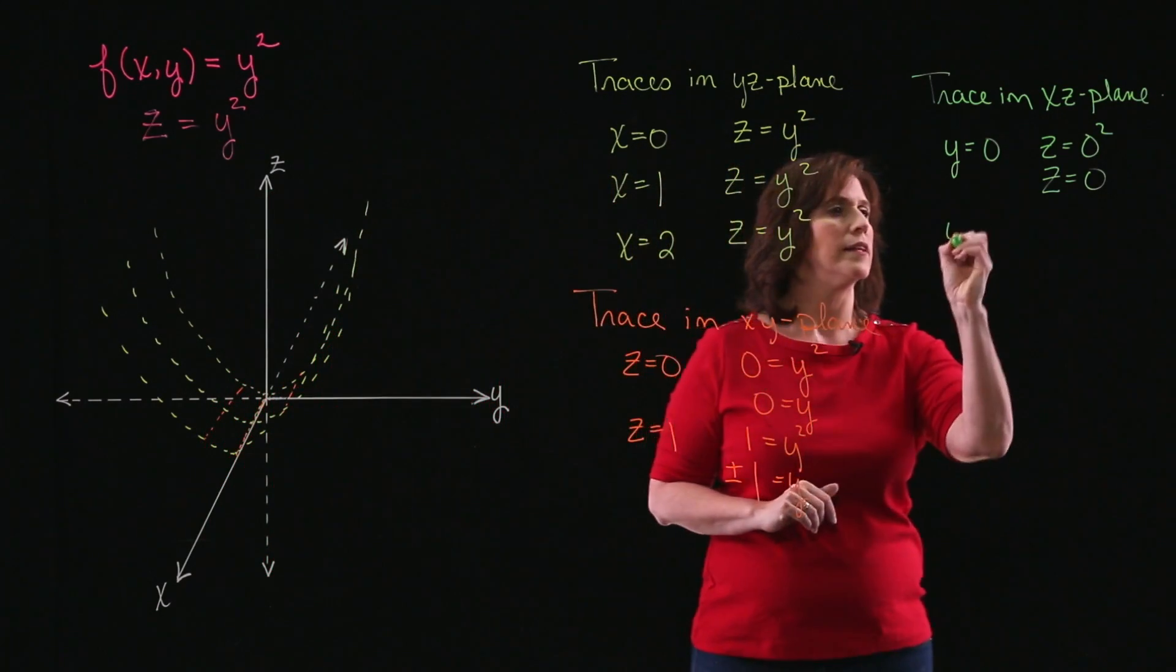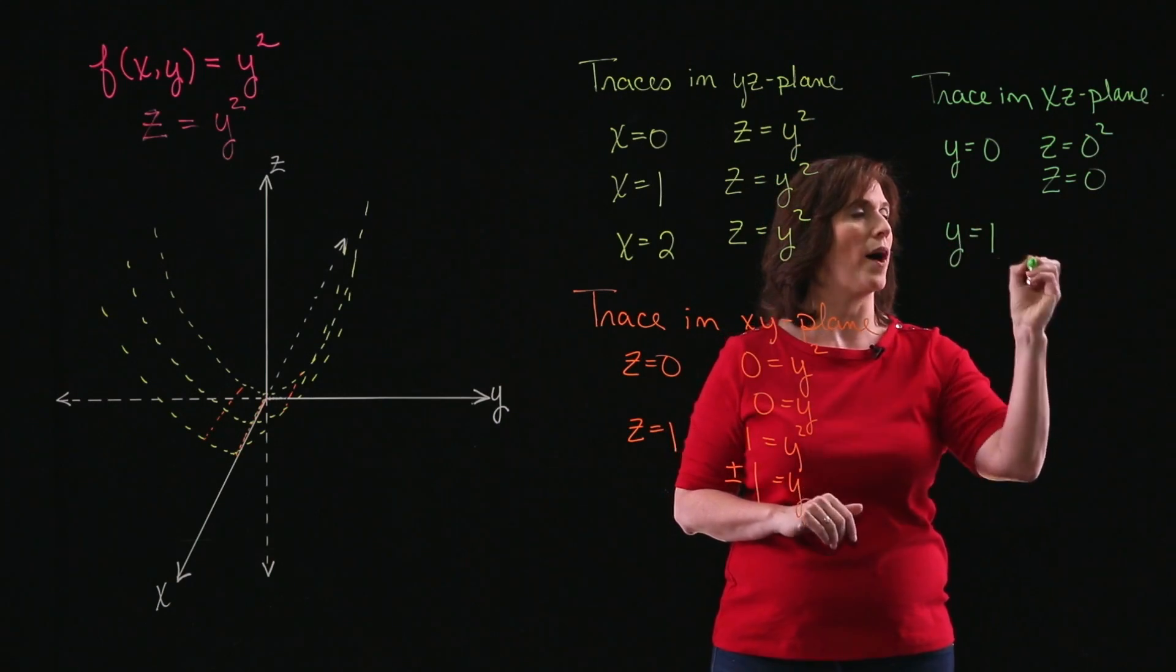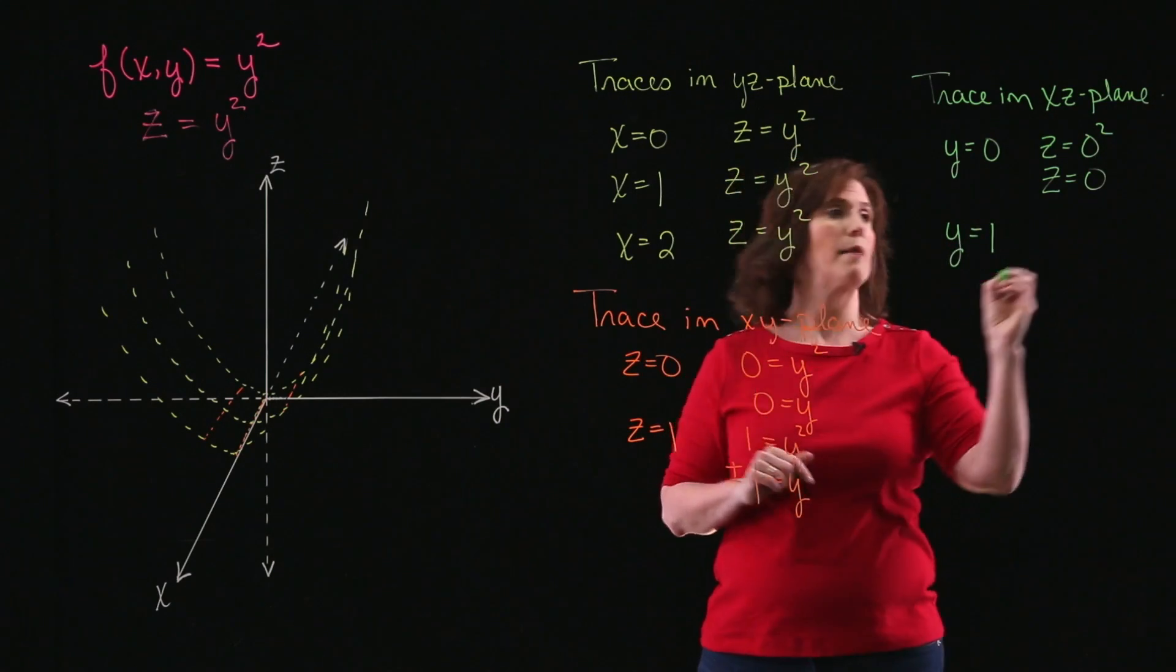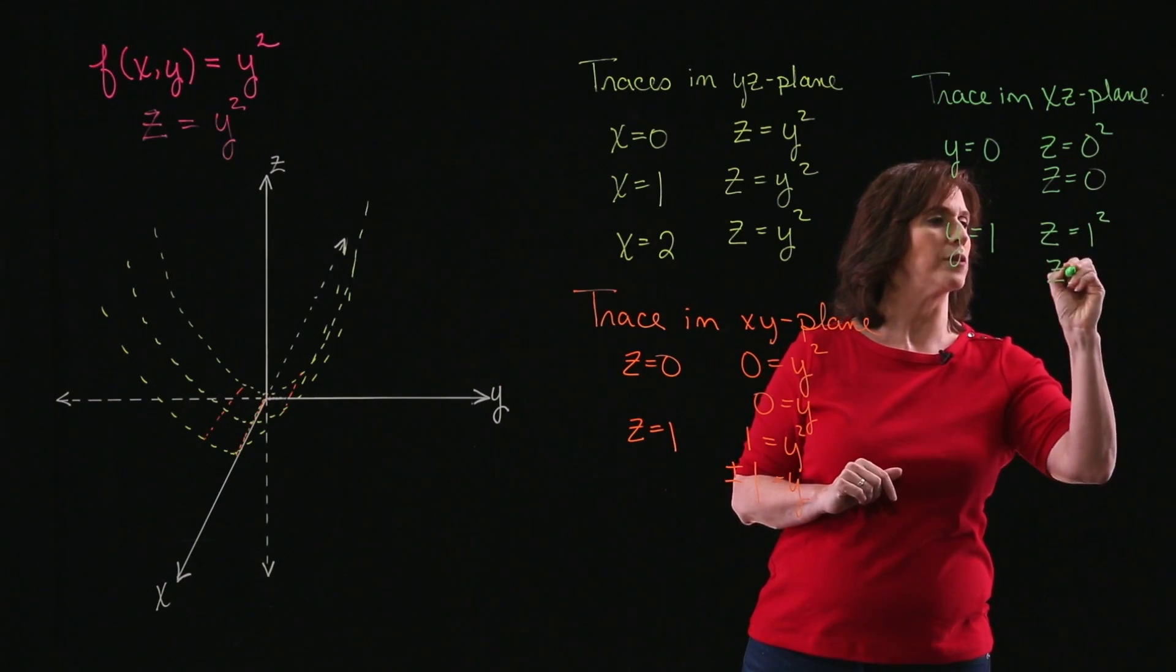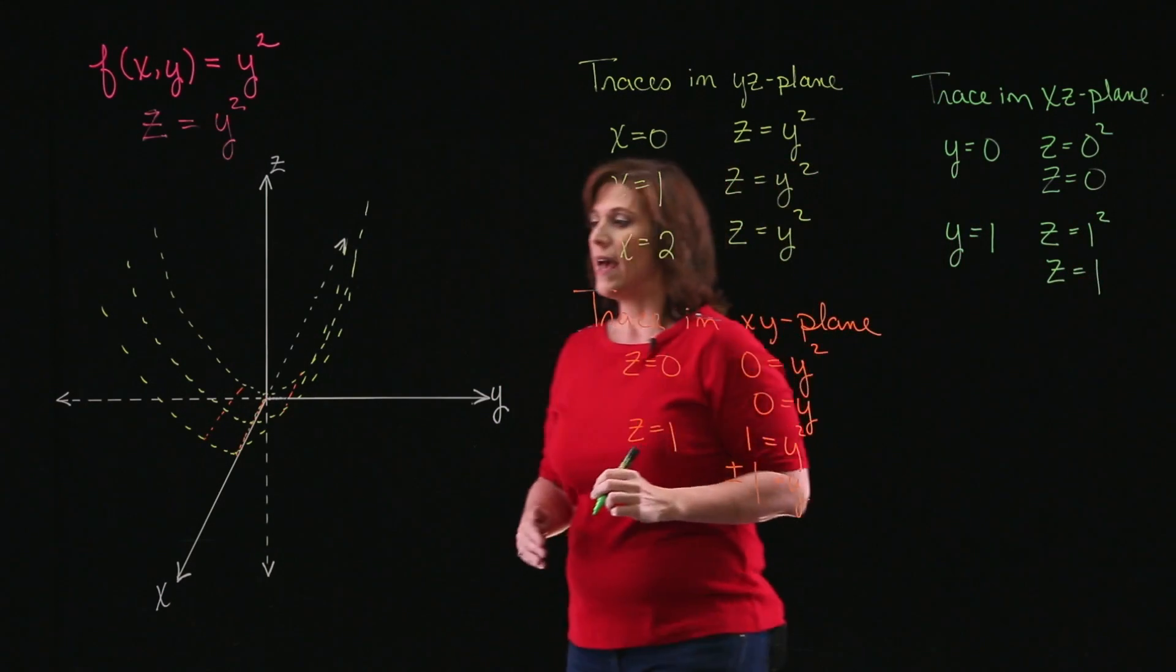Let's try one more. Let's try y equals 1. If y equals 1, I'm going to have z equals 1 squared. Or in other words, z equals 1.